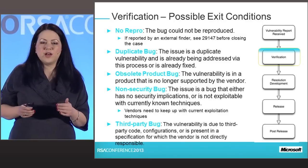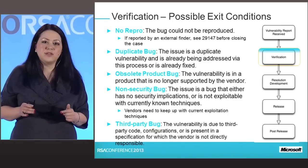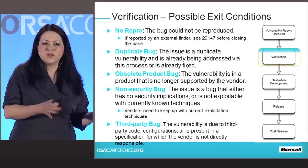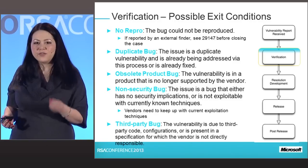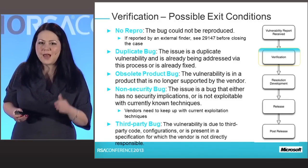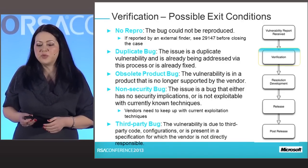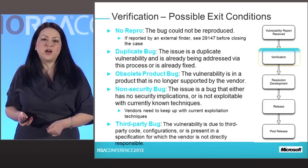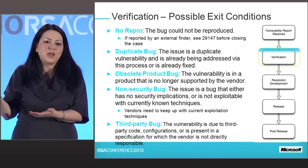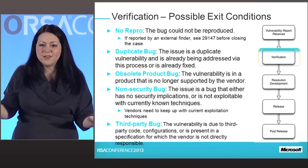If it's a non-security bug, this determination is going to be pretty subjective and may have to be revisited. There may be a security bug technically, but no way to exploit it with current exploitation technology. As a vendor making this determination, you really do have to keep up with exploit science at the cutting edge, because what may not have been exploitable yesterday may be exploitable tomorrow. And if it's a third-party bug, you'll have to coordinate with other vendors — it may turn out to be an underlying component belonging to a different vendor, and you then may become the coordinator.